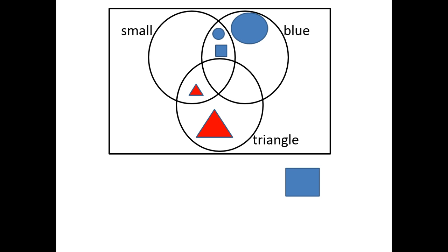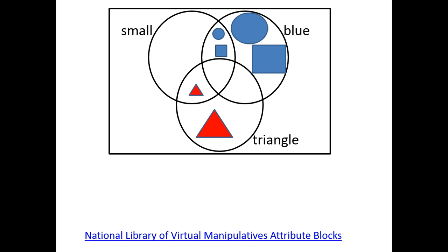And the last shape is not small, it is blue, and it is not a triangle, so it goes here. If you look carefully, each of these circles in our Venn diagram describes all the shapes within that circle. Everything inside the small circle is a small shape, everything inside the blue circle is blue, and everything inside the triangle circle is a triangle. If you'd like to play around with these shapes in a Venn diagram, you can check out the National Library of Virtual Manipulatives and look for their attribute blocks.